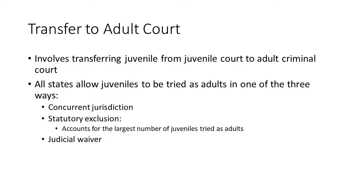Now we're going to talk about transfer to adult court — transferring a juvenile to an adult court. Transfer or waiver to adult court is the process through which a juvenile court relinquishes jurisdiction over a juvenile offender, and the case is processed in adult court. A juvenile who has been waived to adult court is treated like an adult and in many cases is subject to the same punishments. Waiver to adult court is also called certification, transfer, remand, or binding over.